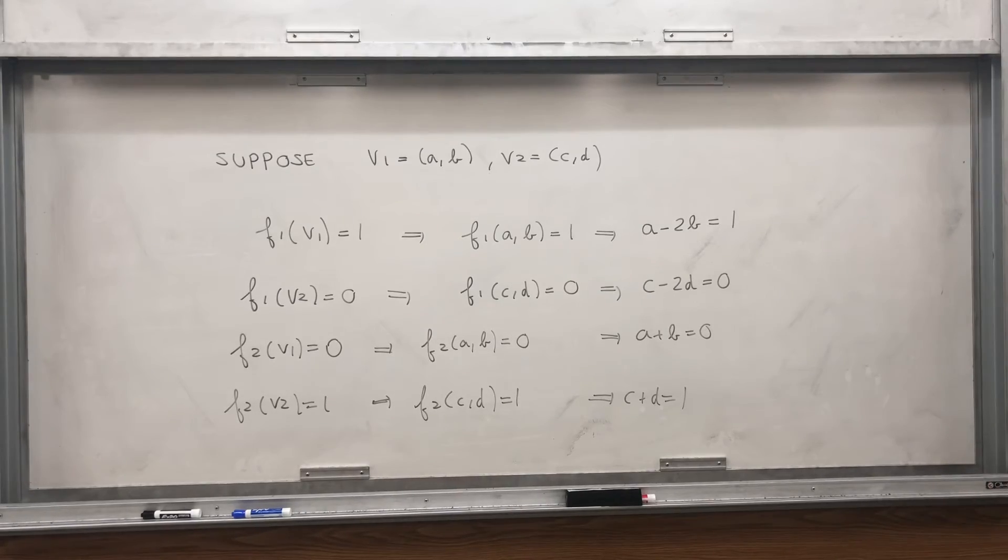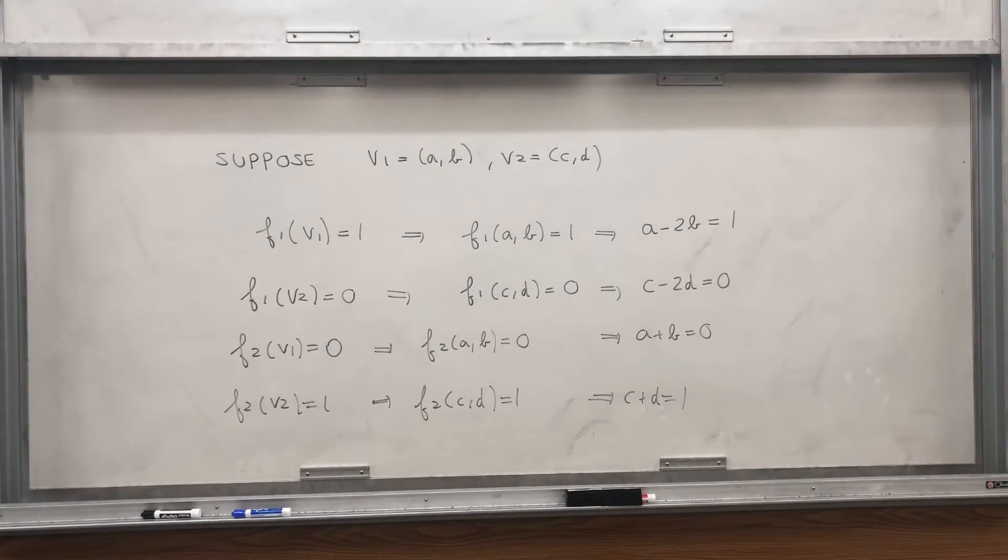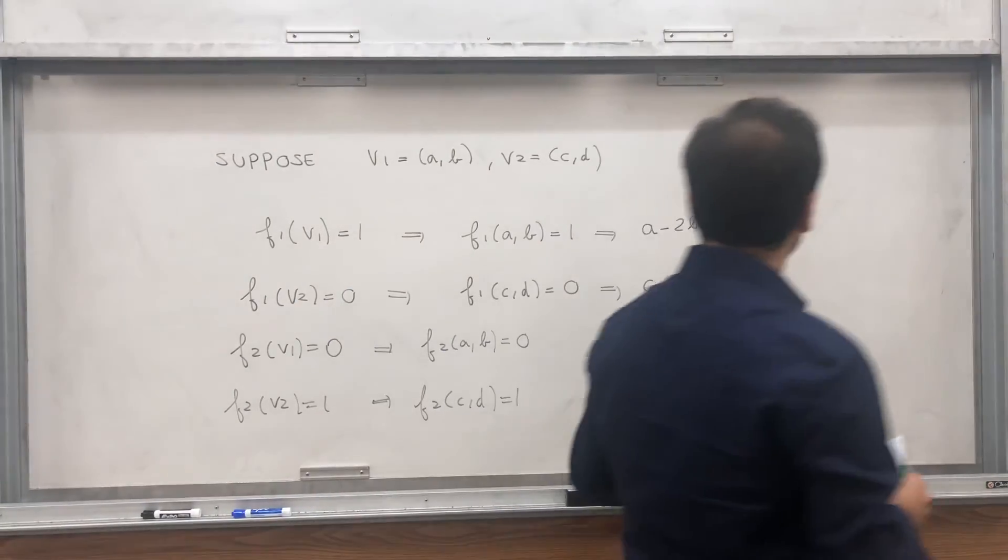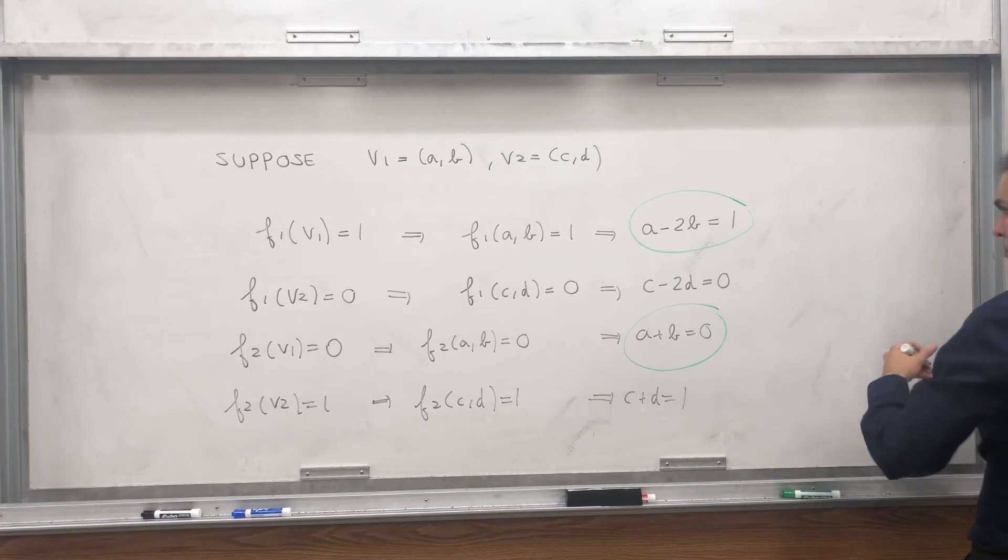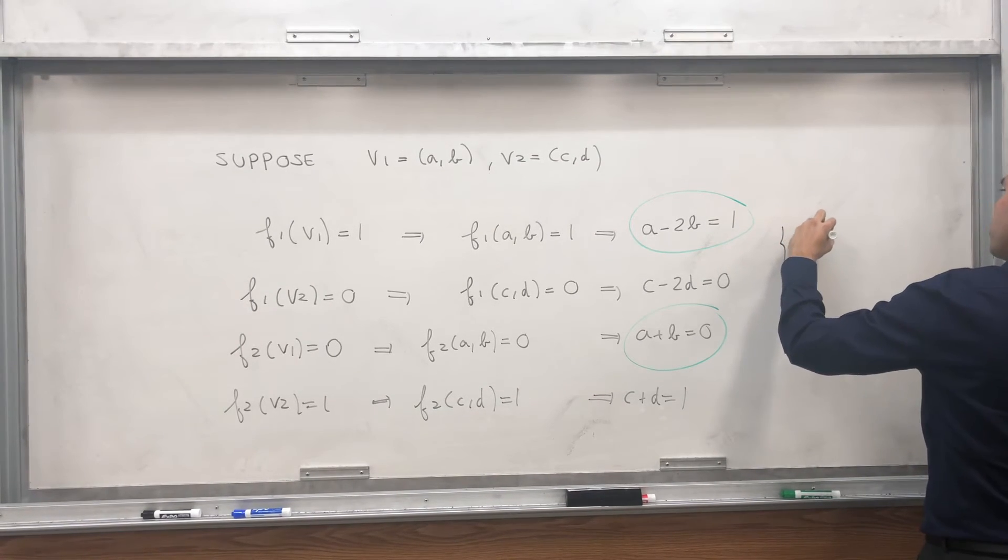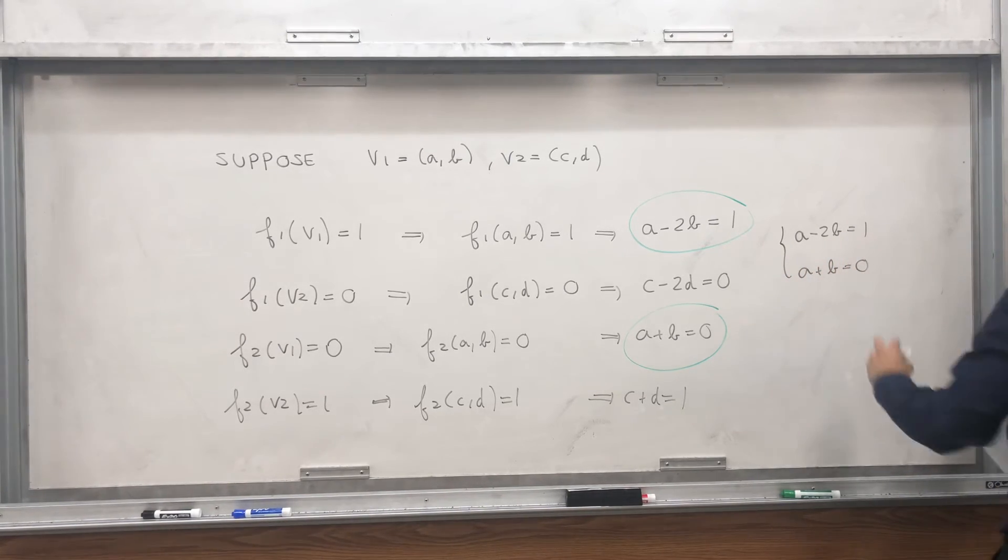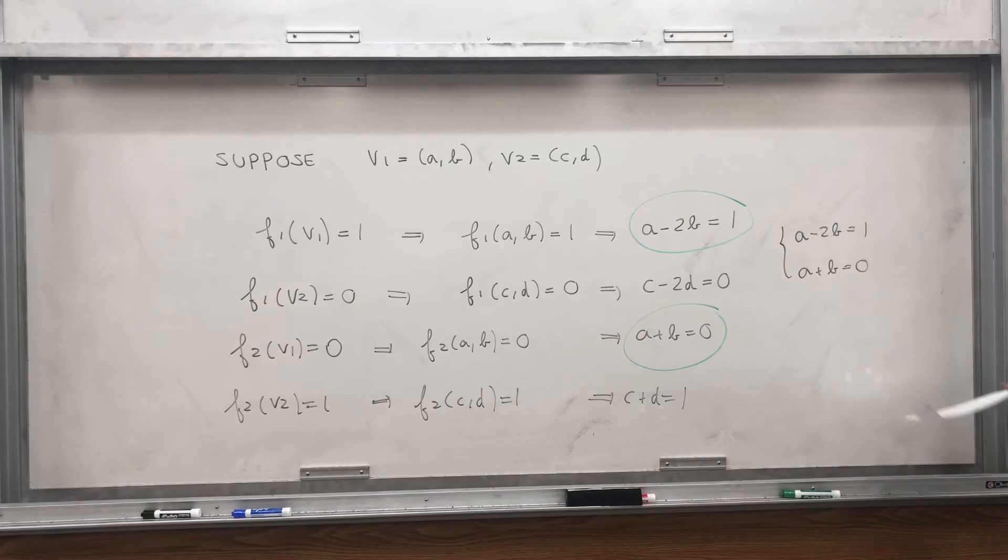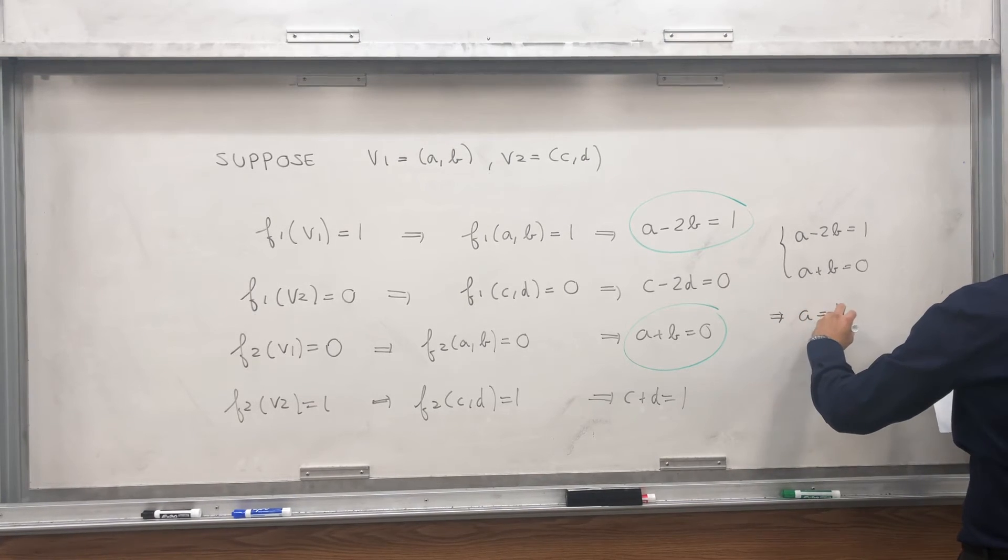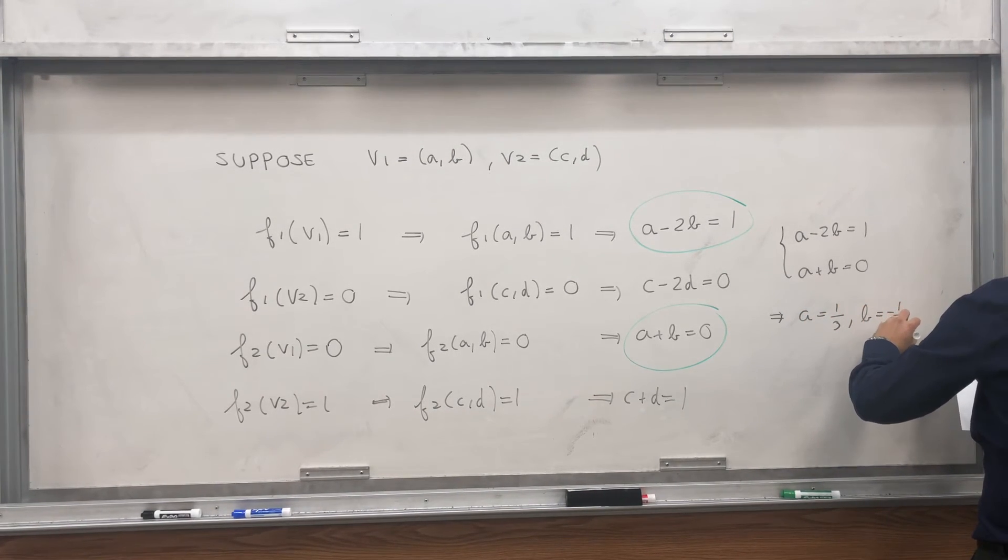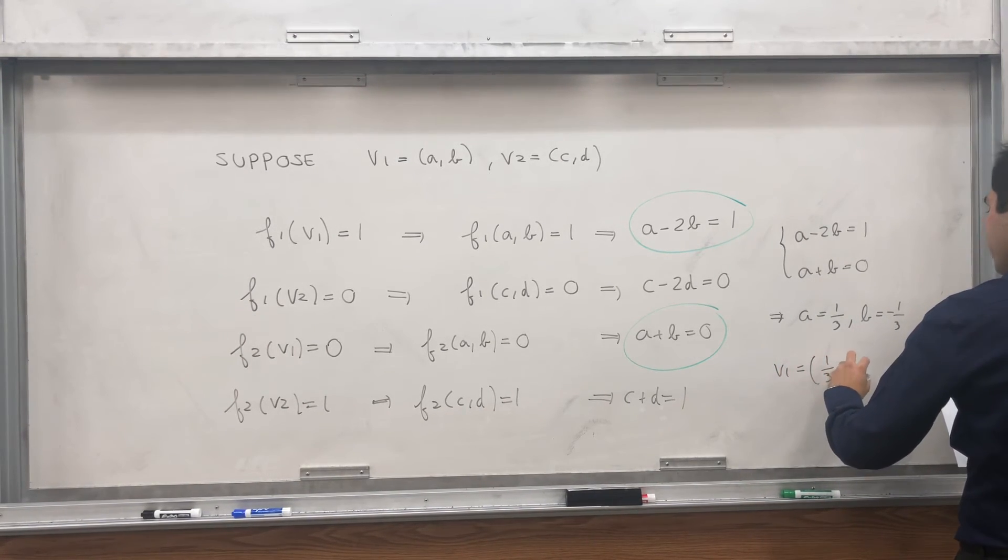So in particular, we get four equations, but we can just use two of them at a time to figure out what A and B are. So, for example, let's use this one and this one to solve for A and B. So what you get is A minus 2b equals 1, and A plus B equals 0. Here, we can easily solve for A and B. In general, use row reduction, and you should get A equals 1 third, and B is minus 1 third. And this actually tells you your vector. V1 is 1 third and minus 1 third.